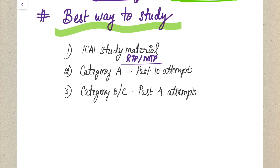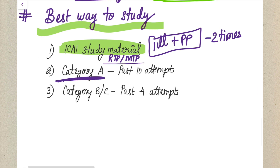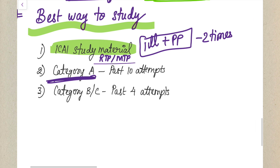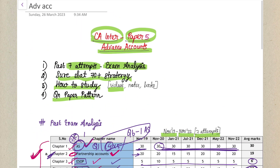The best way to prepare Advanced Accounts is to first practice all illustrations and practical problems from your ICAI study material - try to practice it a minimum of two times. After completing the ICAI material for Category A chapters (Buyback, ESOP, Partnership, CFS, and Accounting Standards), also look at the past 10 attempts' questions, RTPs, and MTPs. For Category B and C, past three to four attempts' RTPs and MTPs are sufficient.